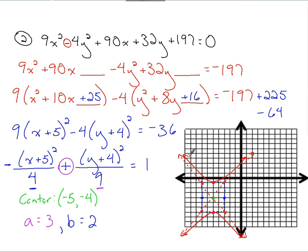The equation to find the focal point, c being the focal point, at least the focal point distance, c squared equals a squared plus b squared. So in this case, it's going to be c squared equals 9 plus 4. c is going to be the square root of 9 plus 4, so c is going to be the square root of 13.